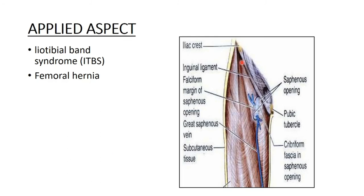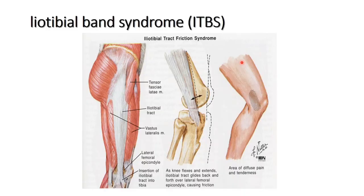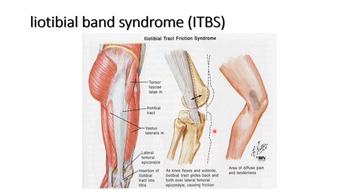Coming to the applied aspects: iliotibial band syndrome is inflammation of the distal portion of the iliotibial tract, occurring due to continuous rubbing of the iliotibial tract against the lateral condyle of the femur. It results from overuse such as continuous flexion and extension of the knee, causing pain on the outer aspect of the knee.